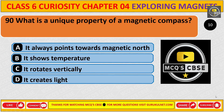What is a unique property of a magnetic compass? The correct answer is option A. It will always point toward magnetic north.